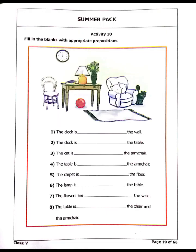Next, fill in the blanks with appropriate prepositions. You are given some blanks where you have to put accurate prepositions according to the sentence. Prepositions include words like in, on, under, above, below. For example, blank number 1: the clock is on the wall, or the clock is above the table. Similarly, you have to complete all the blanks using correct prepositions.